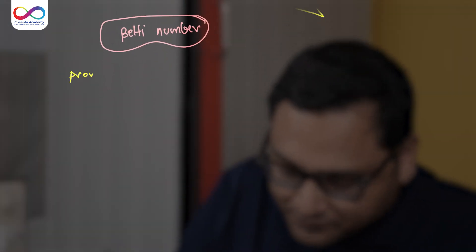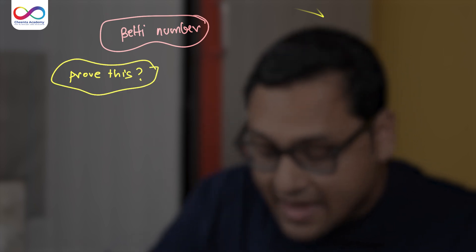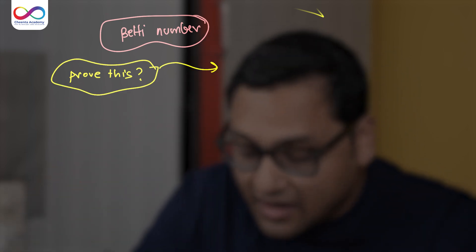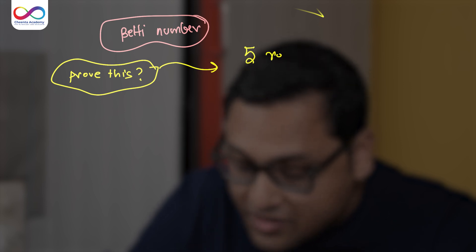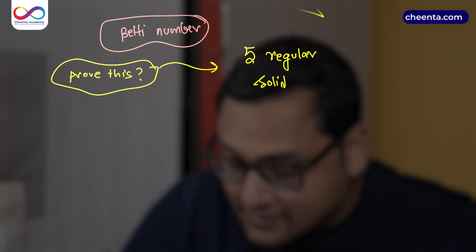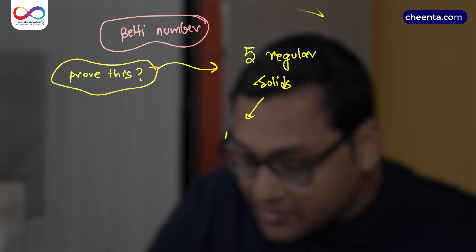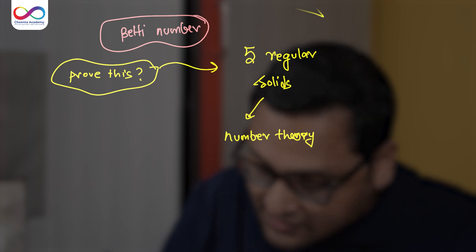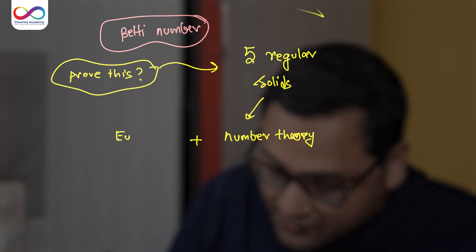Now, the question is, how can you prove this? How can you prove that this happens? And how can you show that there are only five regular solids? Using number theory. Number theory and Euler's formula.